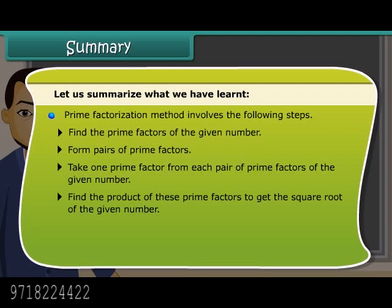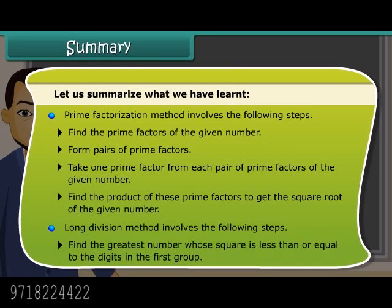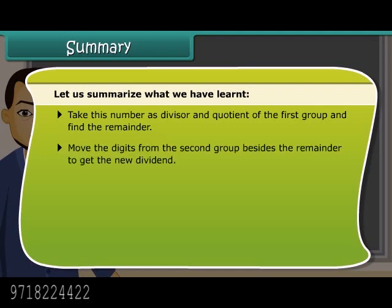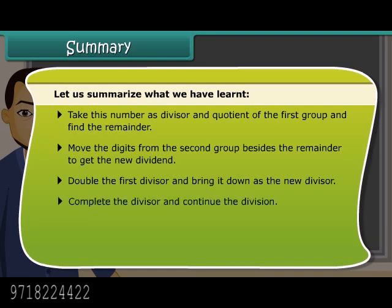Long division method involves the following steps: find the greatest number whose square is less than or equal to the digits in the first group; take this number as divisor and quotient and find the remainder; move the digits from the second group beside the remainder to get the new dividend; double the first divisor and bring it down as the new divisor; complete the divisor and continue the division.